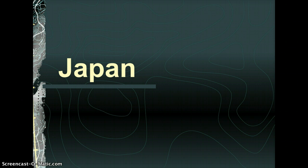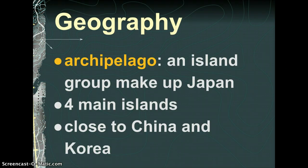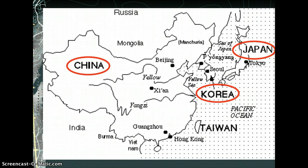That brings us to Japan. Japan is an archipelago, which is a group of islands. In their case, it's four islands on the east side of China. Here's China, here's South Korea, North Korea, and this is the main Japanese island — two islands, three and four. Archipelago.